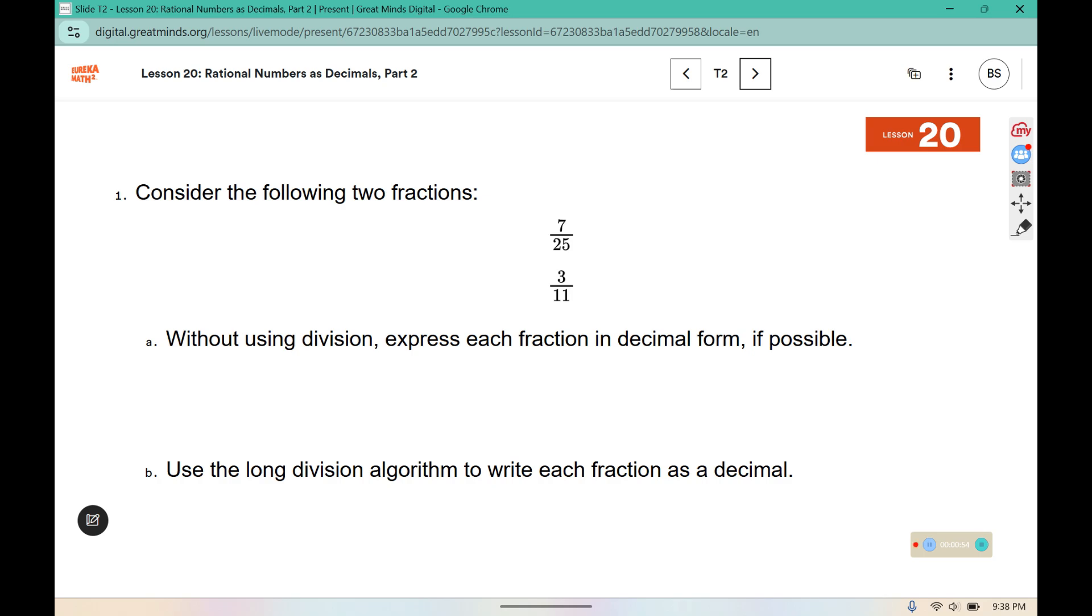Consider the following two fractions, 7 25ths and 3 11ths. Without using division, express each fraction in decimal form if possible. In the last lesson we saw that if you can create a denominator that is made up of twos and fives, then you can write it in the decimal fraction.